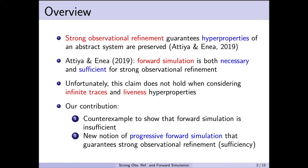In their paper, they also claim that forward simulation, which is a proof technique for refinement, is both necessary and sufficient for strong observational refinement. It turns out, however, that this claim does not hold when we consider infinite traces and liveness properties. Our two main contributions are: we provide a counterexample to show that forward simulation is insufficient for preserving all hyperproperties, and we define a new notion called progressive forward simulation that does guarantee strong observational refinement.